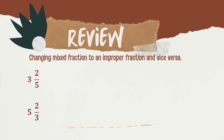Let us change 3 and 2 fifths to an Improper Fraction. First, multiply the whole number by the denominator. So that is 3 times 5, which is 15. Then add the product: 15 plus 2. The answer is 17. 17 will be our numerator, and the denominator is also 5. So the improper fraction of 3 and 2 fifths is 17 over 5.